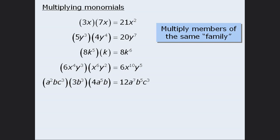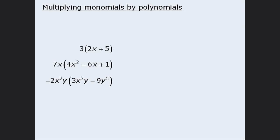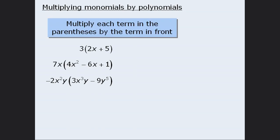Next we will examine the products of monomials and polynomials. When we multiply a polynomial by a monomial, the rule is to multiply each term inside the parentheses by the term in front. So for example, we will take this 3 outside the parentheses and use it to multiply each term inside the parentheses. To begin, 3 times 2x is 6x.